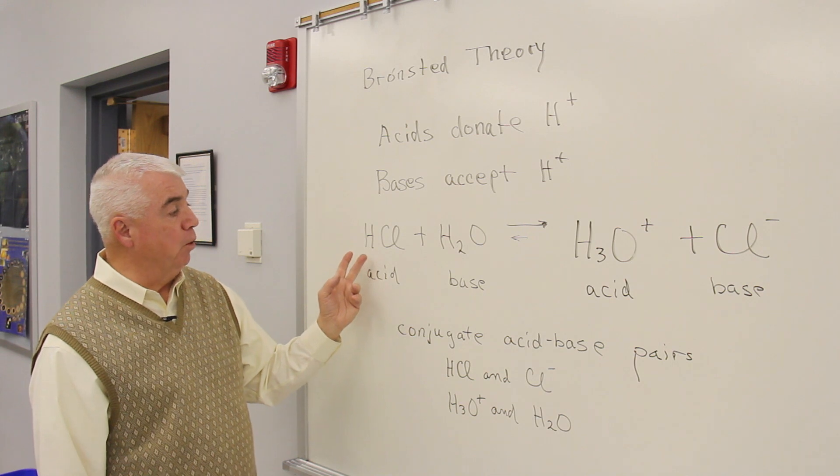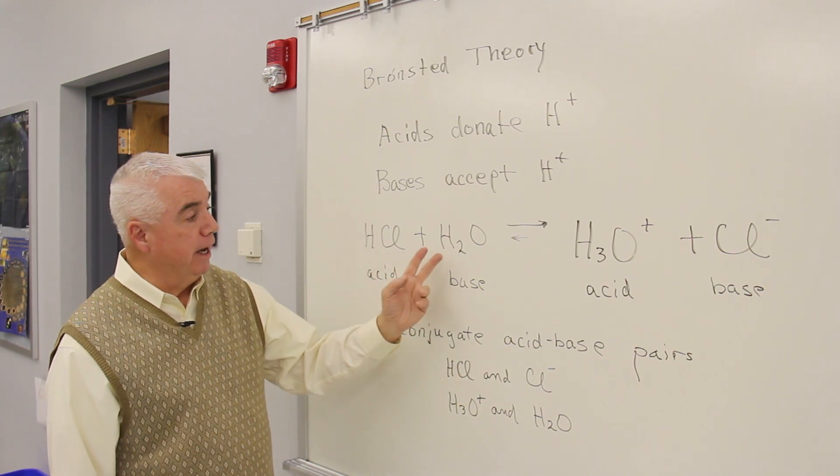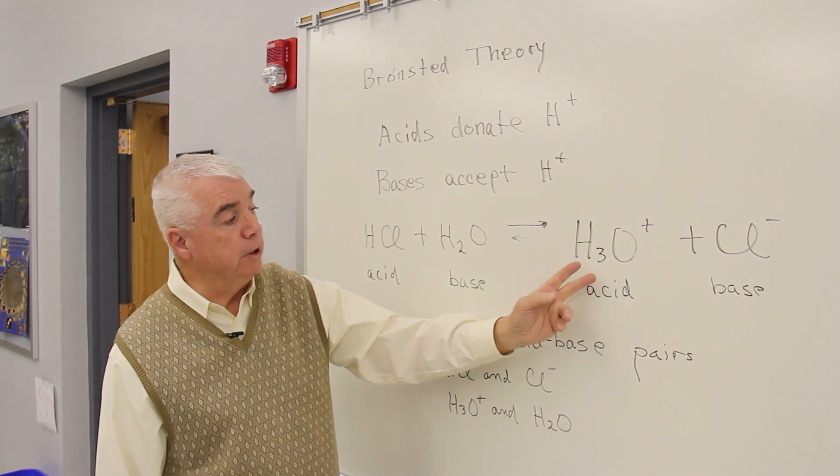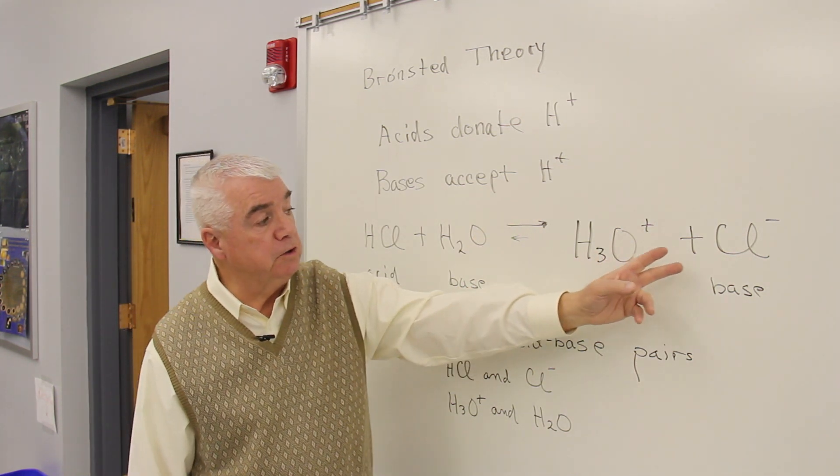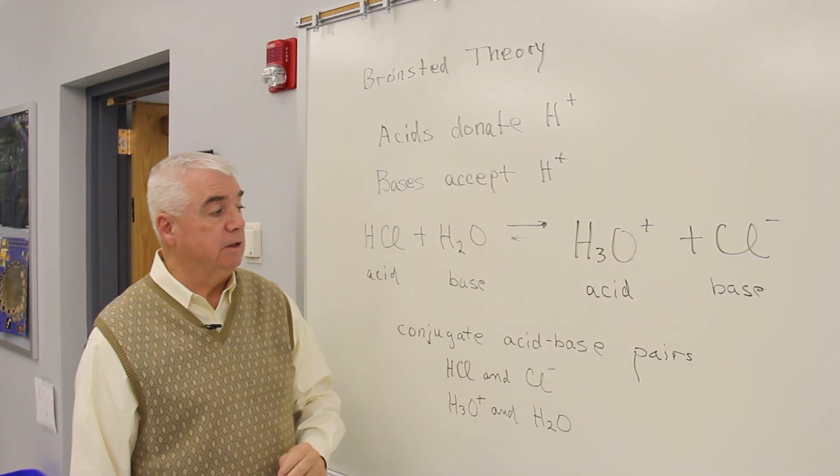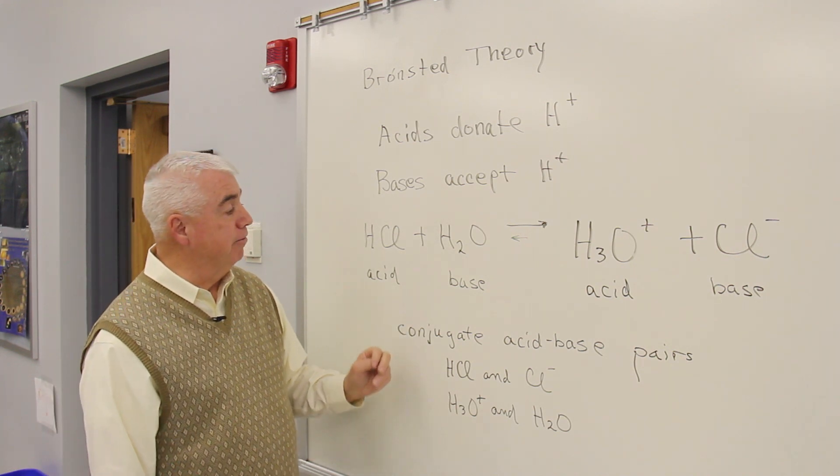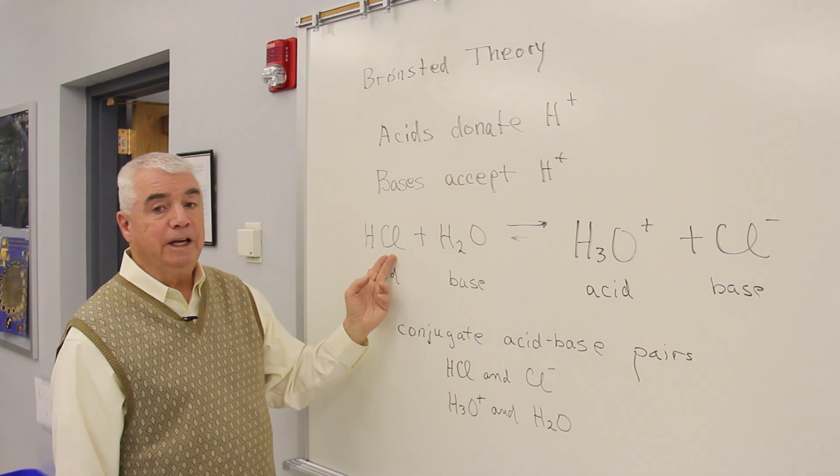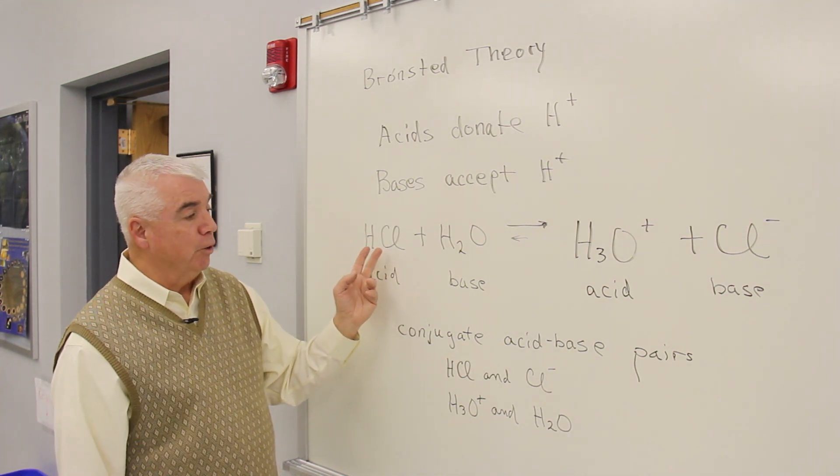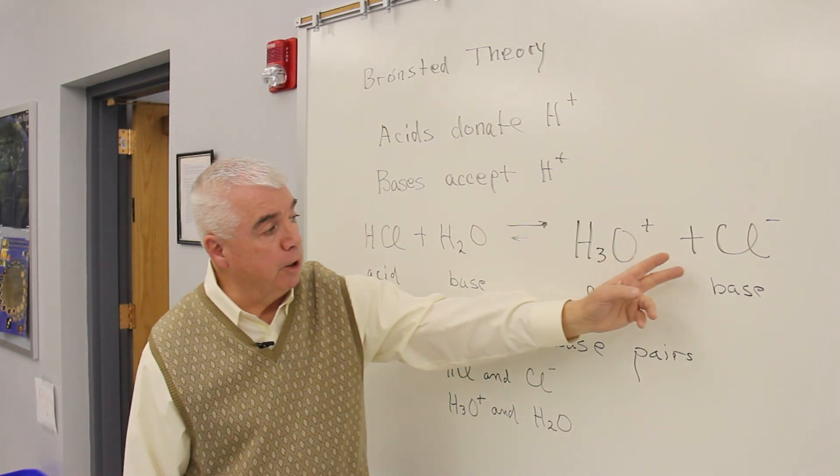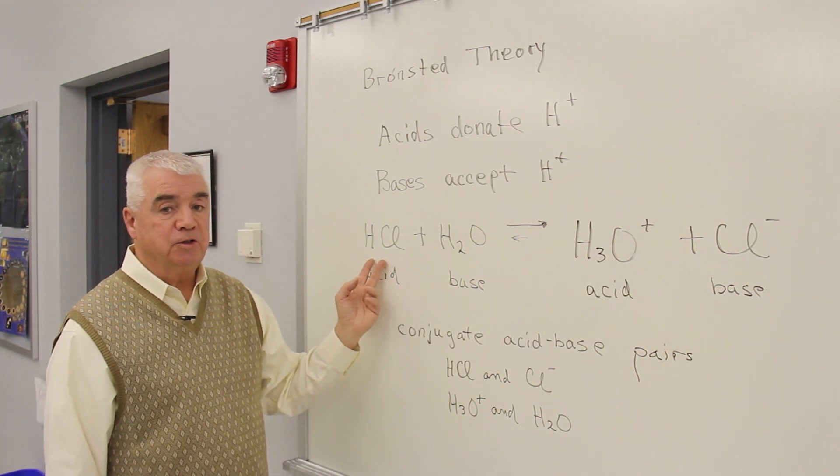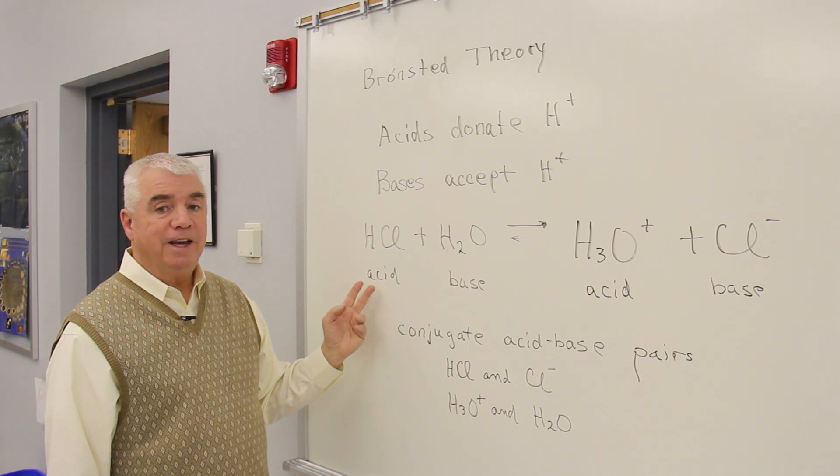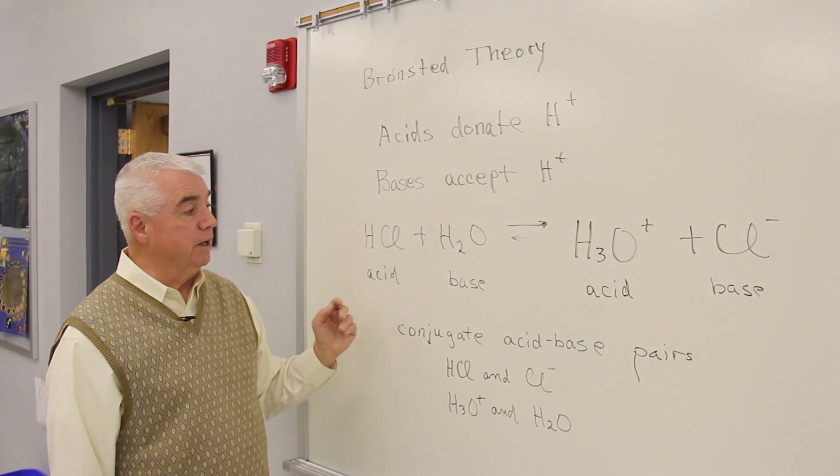Here's an example. If we add HCl to water in a reversible reaction, it can form H3O+, plus Cl-. Let's see if we can identify the Bronsted acid. I noticed that as I go from the left to the right, HCl has given up its proton. That means that HCl is a Bronsted acid.